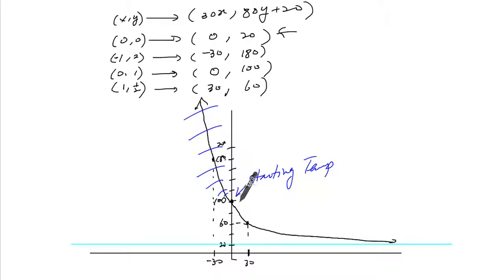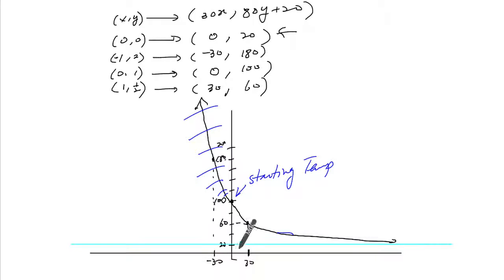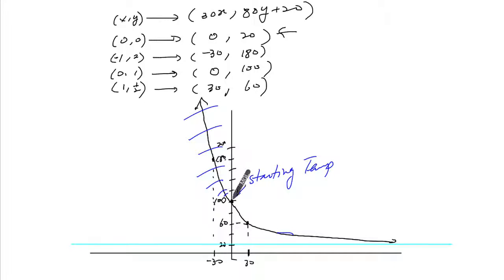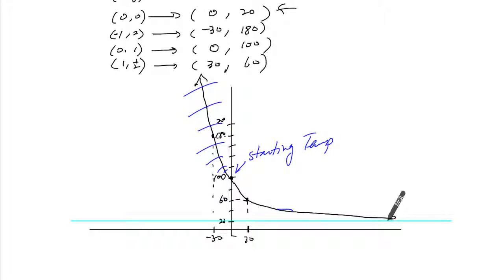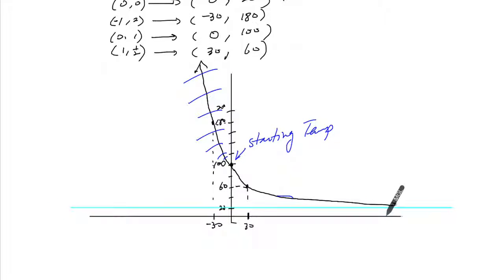This part of the graph is not part of the actual real-world problem. We have a cup that's 100 degrees and it cools down because the room temperature is 20 degrees. It cools quickly at first but eventually slows — it will never really reach 20, or at most it will reach 20 after a very long time. That's why this is a good model for the cooling of the hot liquid.